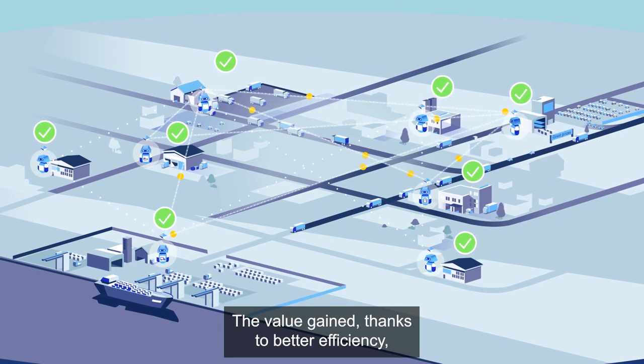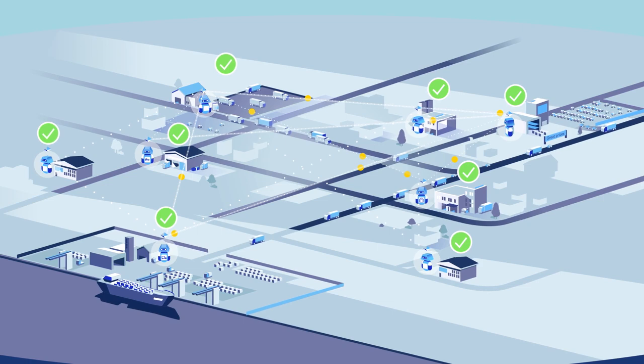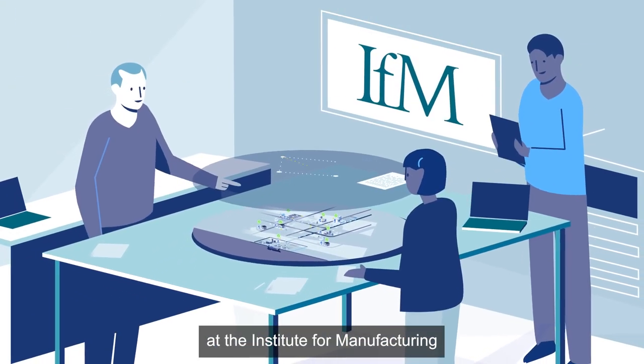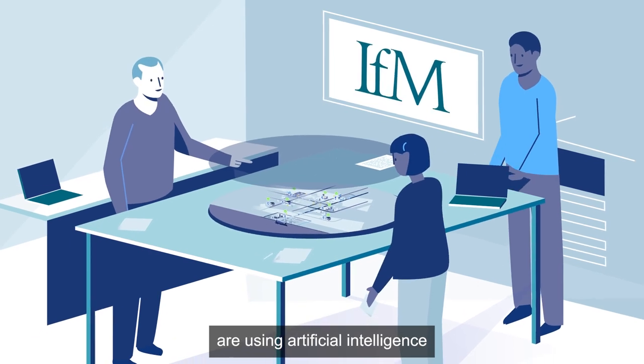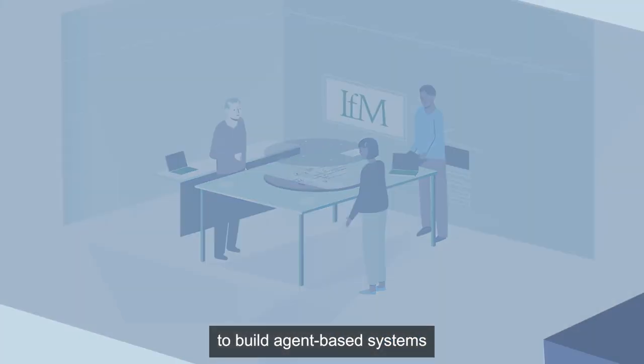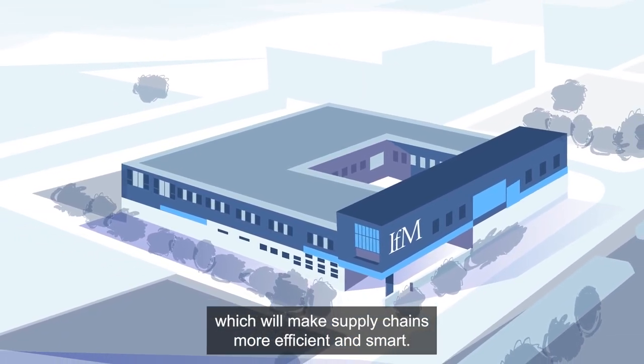The value gained, thanks to better efficiency, is shared across the whole supply chain. Researchers in the Manufacturing Analytics Group at the Institute for Manufacturing are using artificial intelligence and the Internet of Things to build agent-based systems which will make supply chains more efficient and smart.